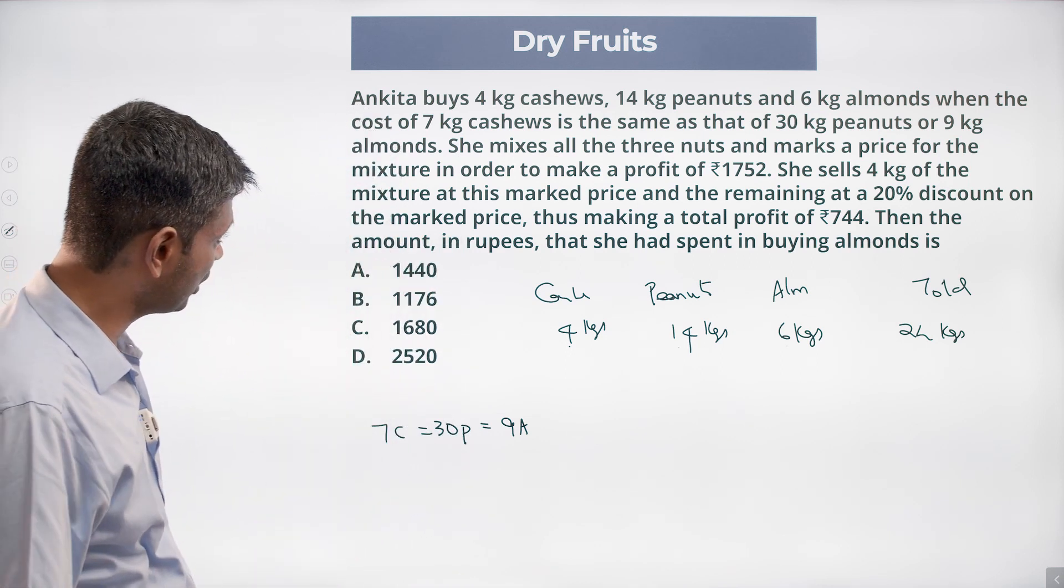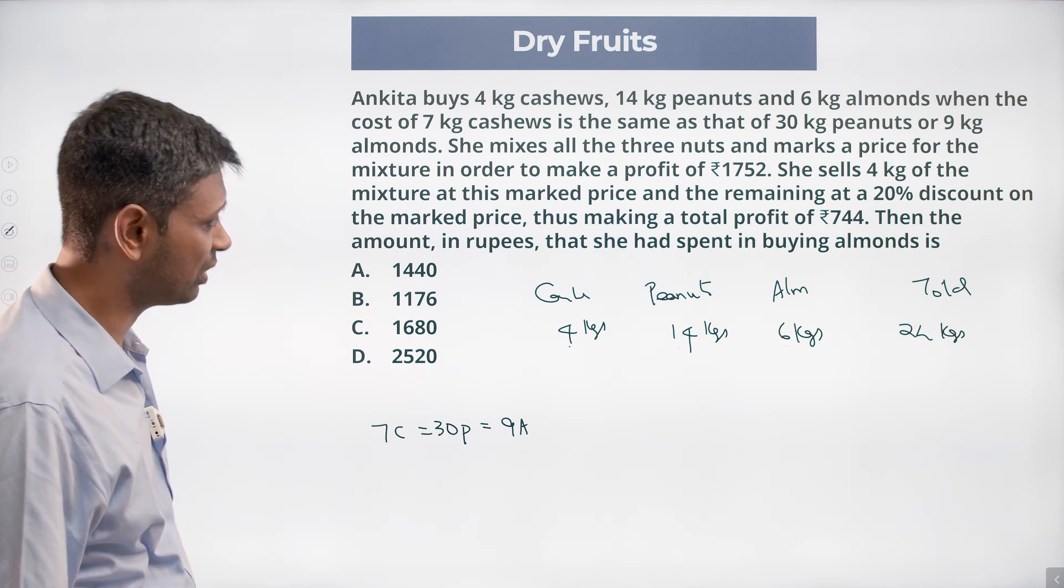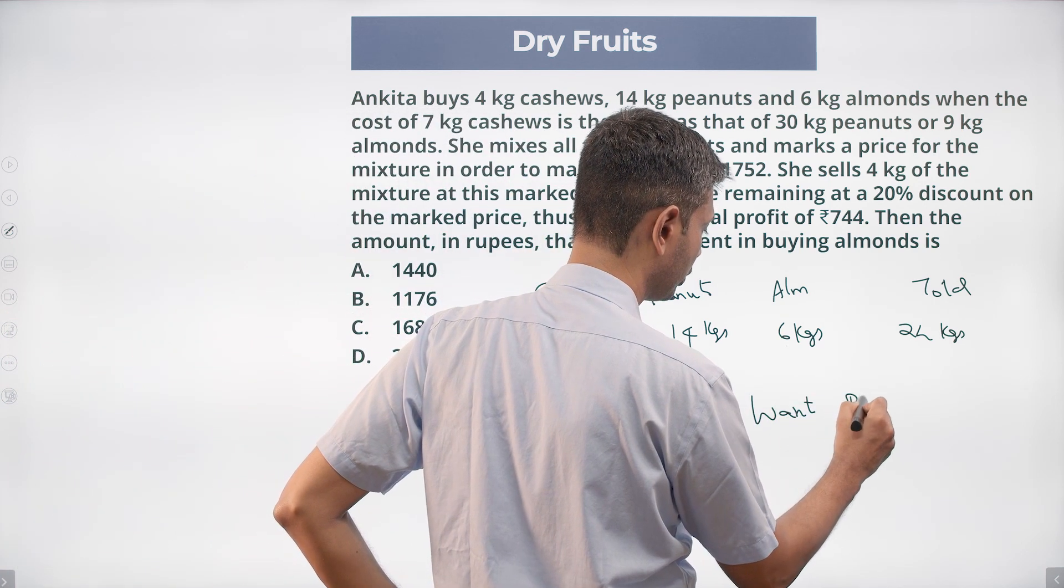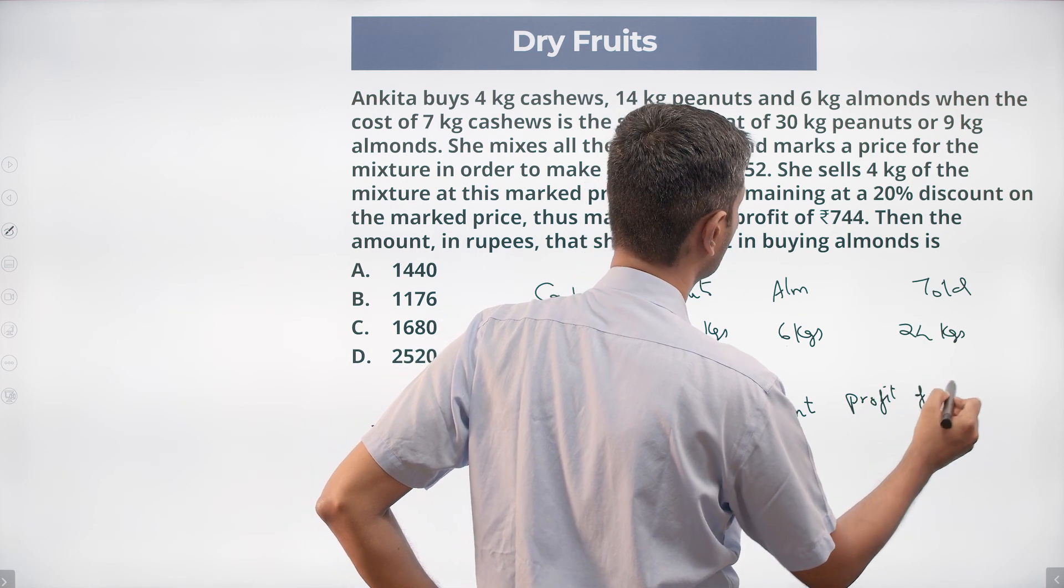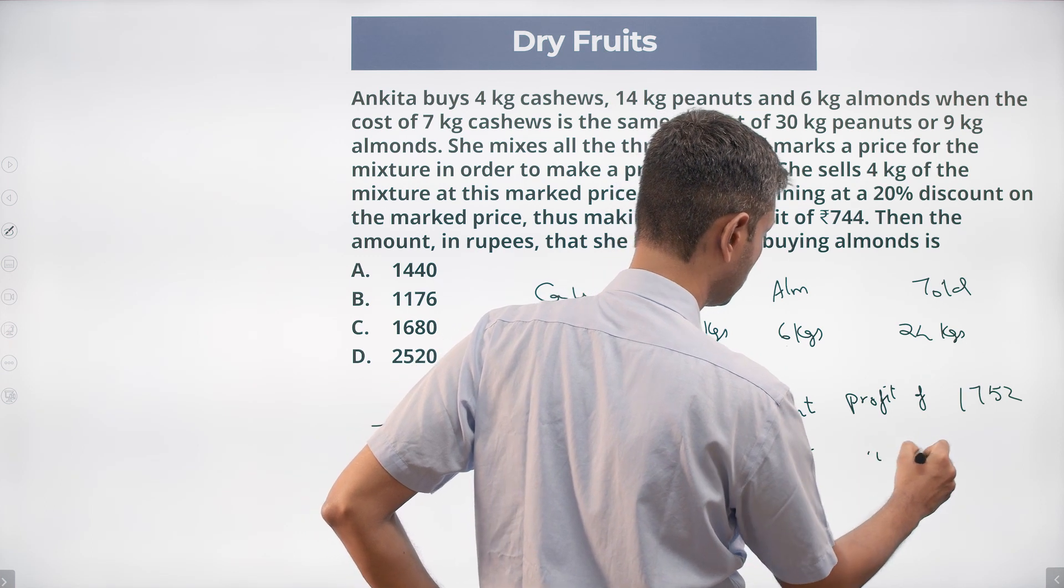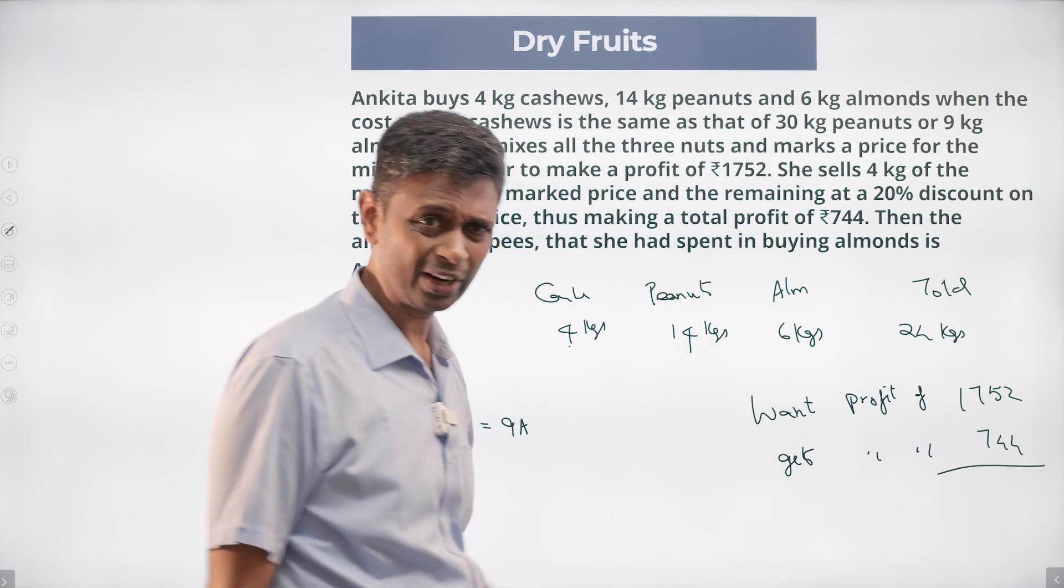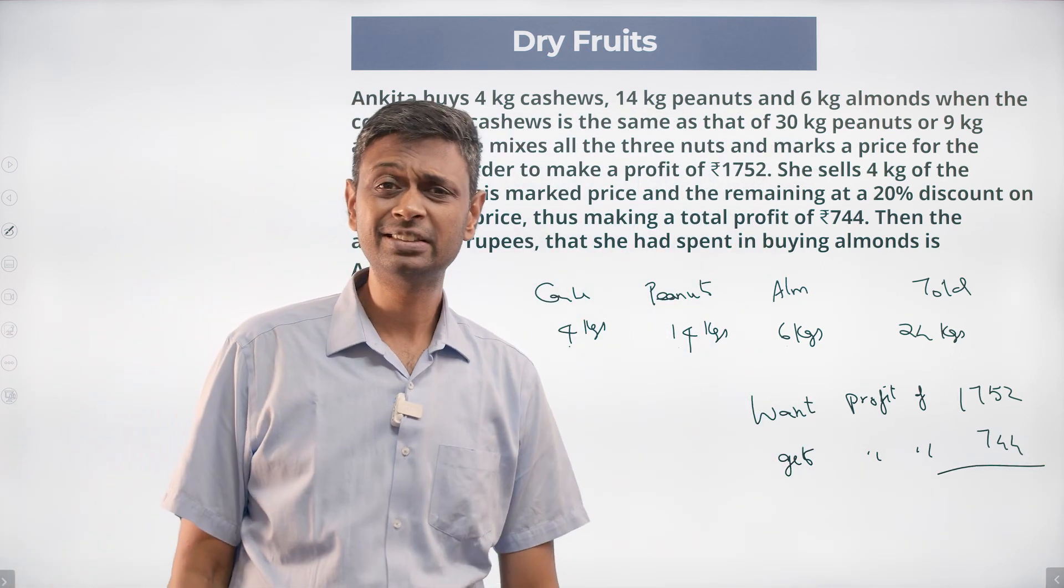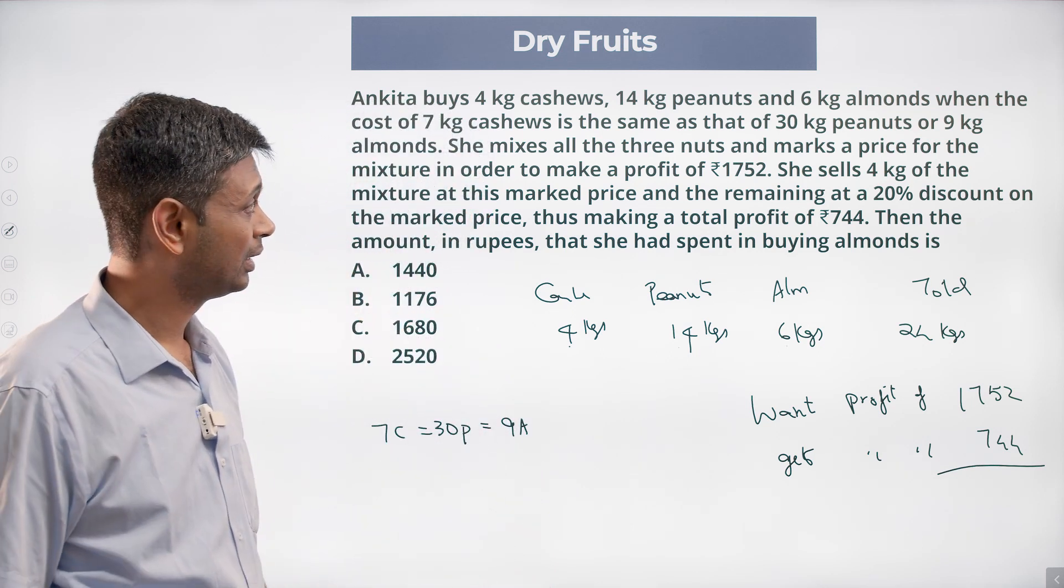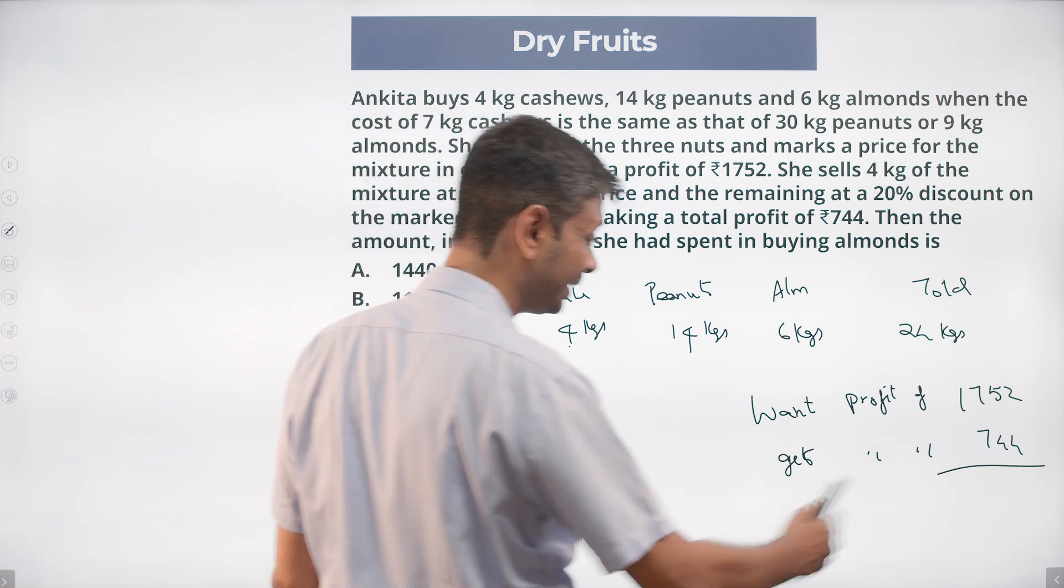She sells four kilograms of the mixture at this mark price and the remaining at a 20% discount on mark price. That's making a profit of 744. She sells four kilograms at this price and remaining at 20% discounted mark price, and that delta is 1008.